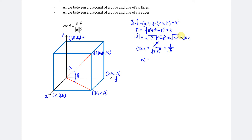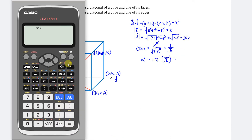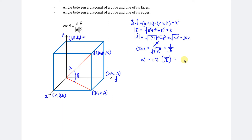So alpha equals the inverse cosine of 1 over square root of 3. Pressing this into the calculator, we obtain 54.74 degrees. This is the angle between the diagonal and the edge.